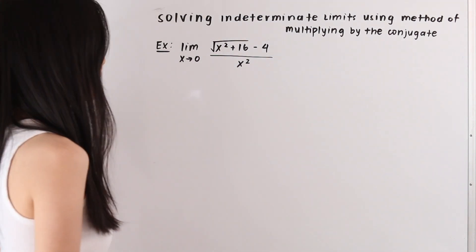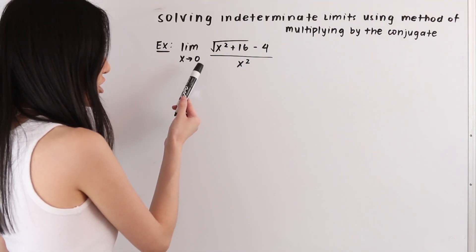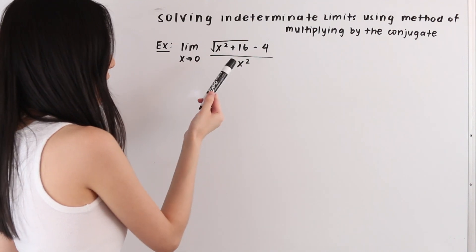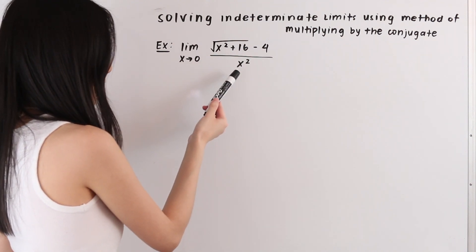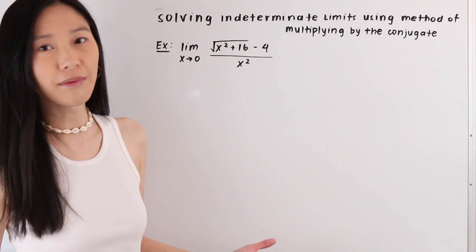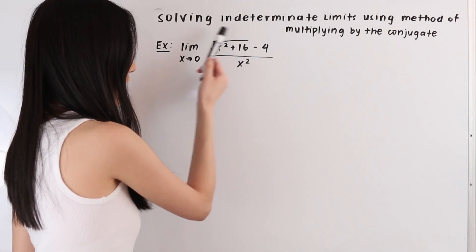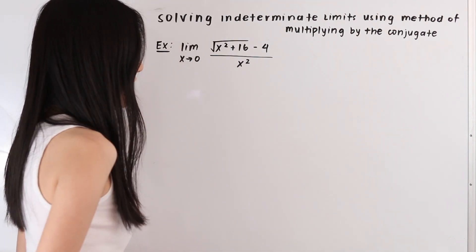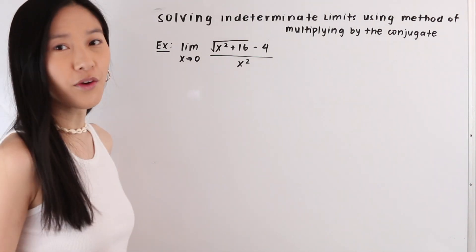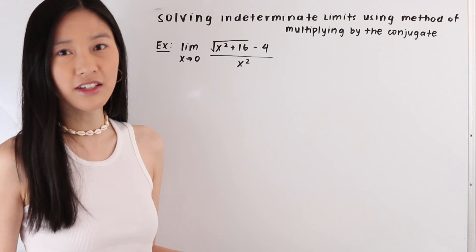In this first example we have the limit as x approaches 0 of the function: the square root of x squared plus 16, minus 4, all over x squared. The first thing we always do when solving a limit problem algebraically is we plug in the value for a into our function f(x), and when we do that here we get 0 over 0, which is an indeterminate form, meaning we need to use another method to solve this limit.